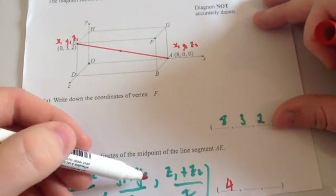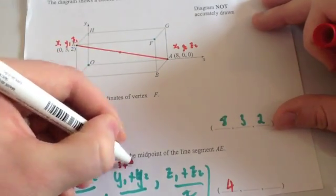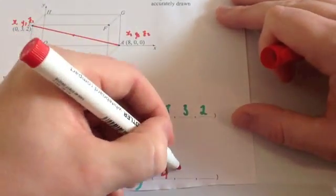Next one, y1 plus y2, so y1 is 3, plus y2 is 0, so 3 plus 0 is 3, and half it is 1.5. So obviously here you're going to have 1.5.